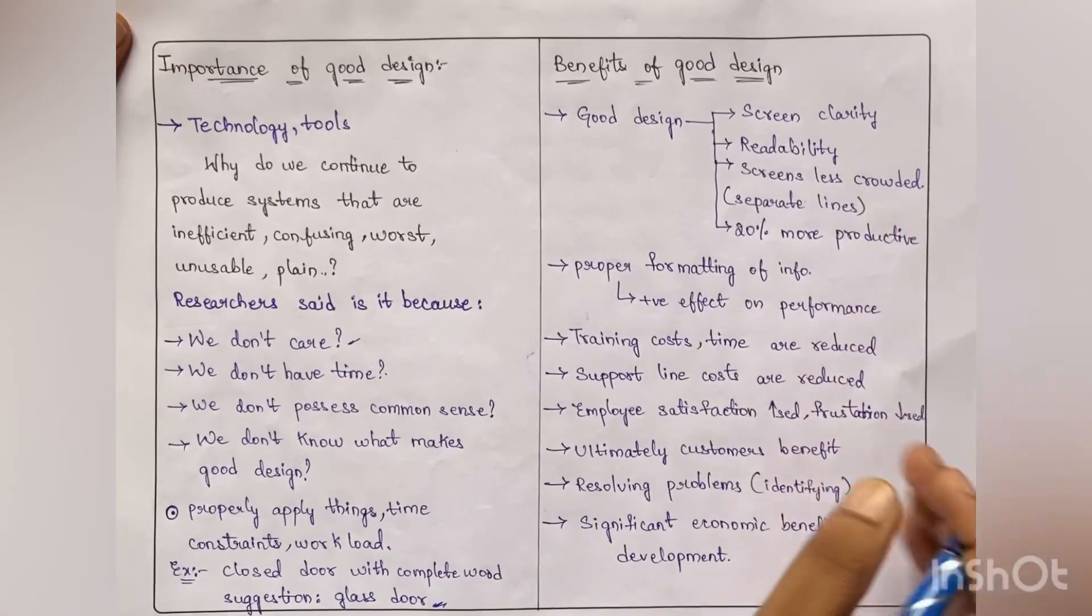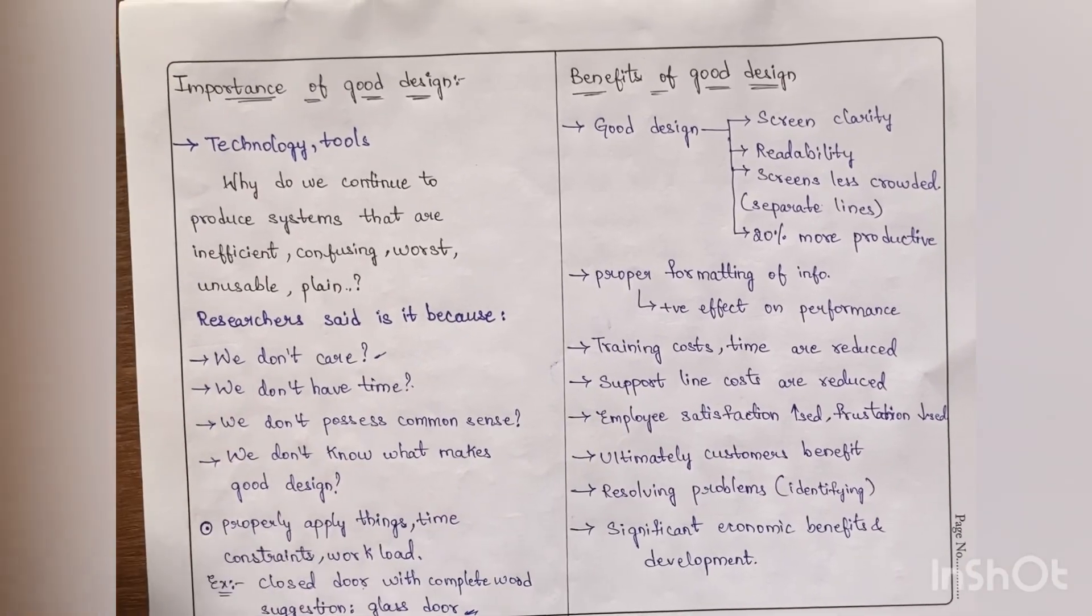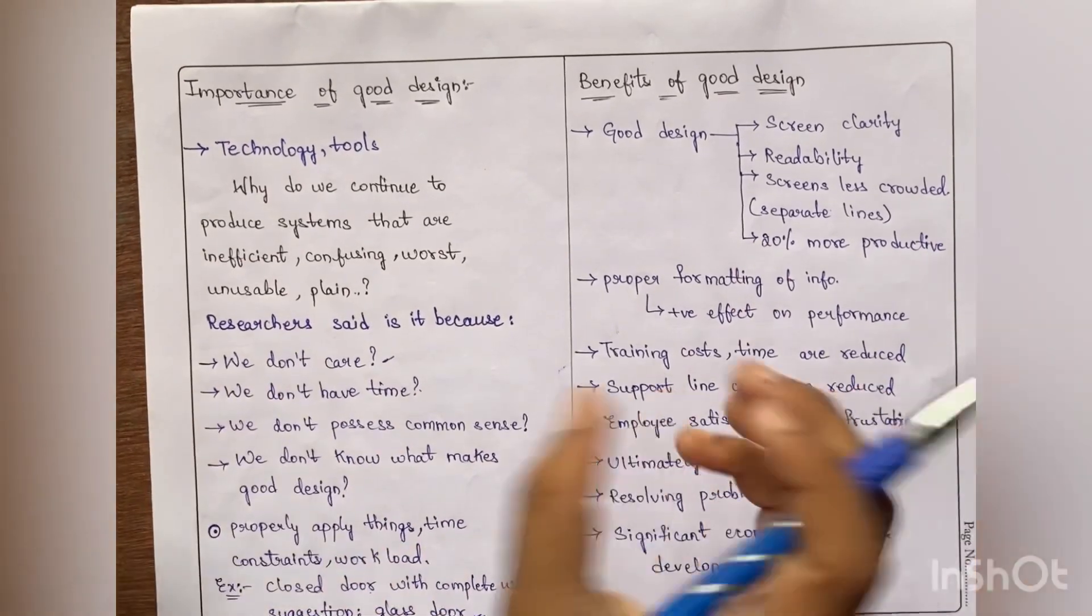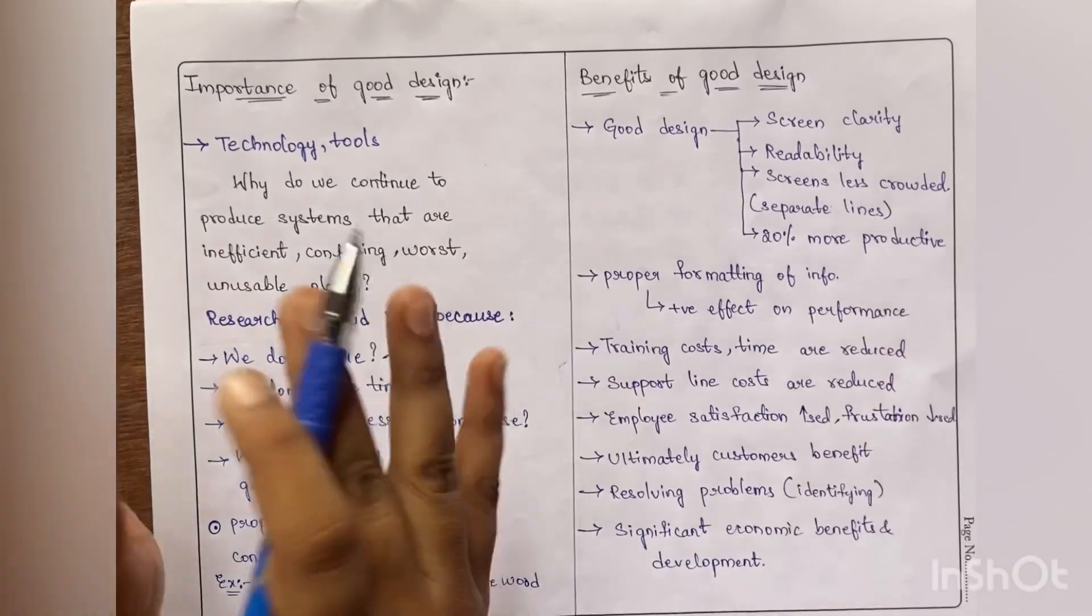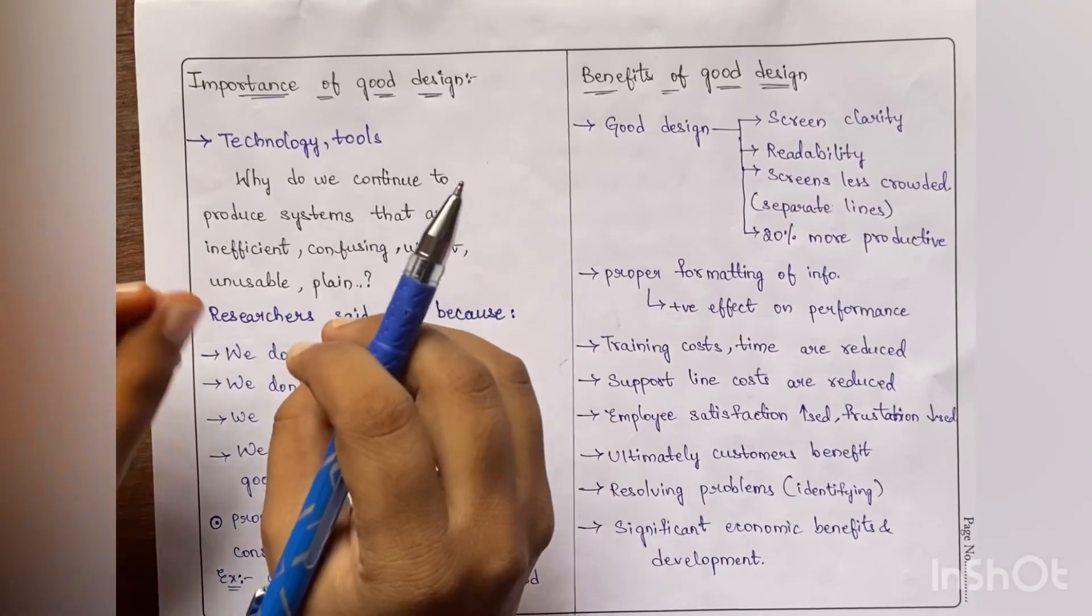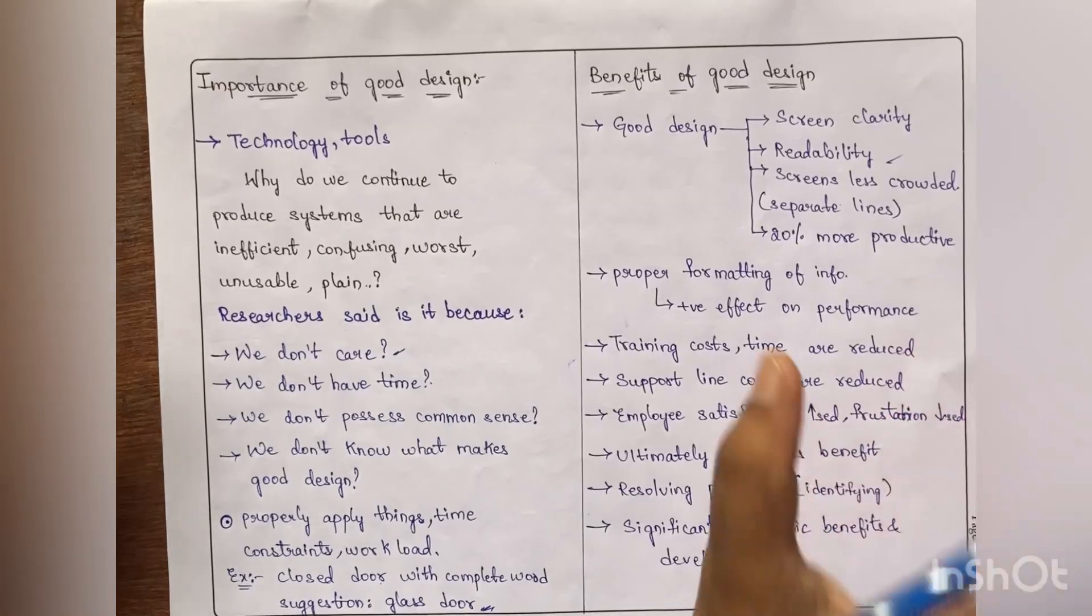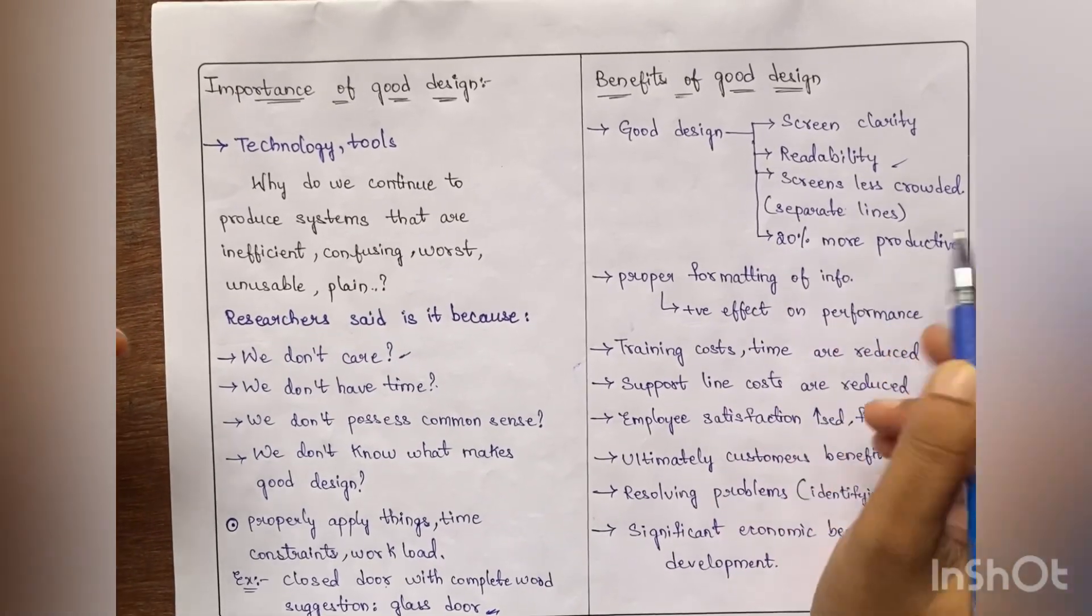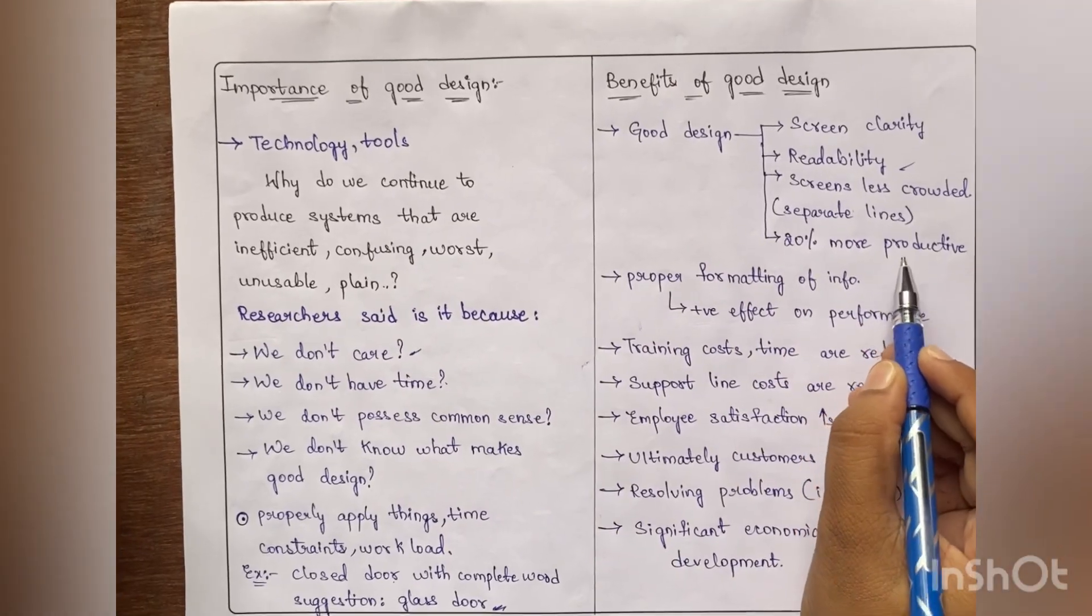Coming to benefits of good design, we know a good design helps in good clarity, screen clarity. When screen is clear, the components are separated, they are neat. Without any confusion we can look at them, we can read at them. Because of that reason, 20% of the production has been increased. That means with good design, productivity has been increased by 20%.